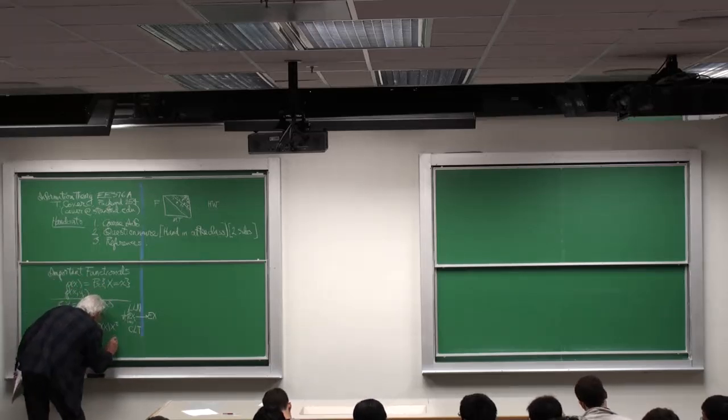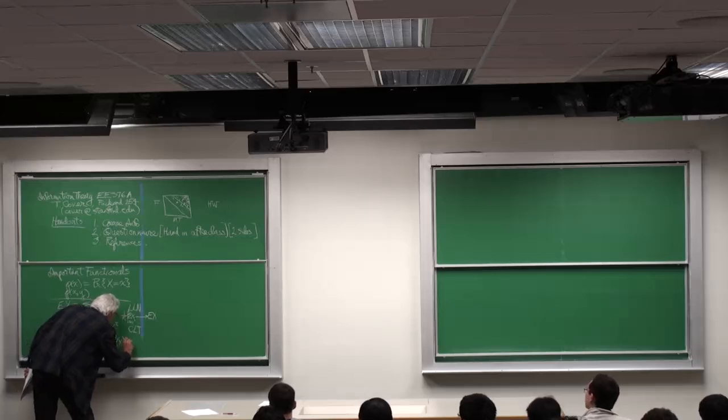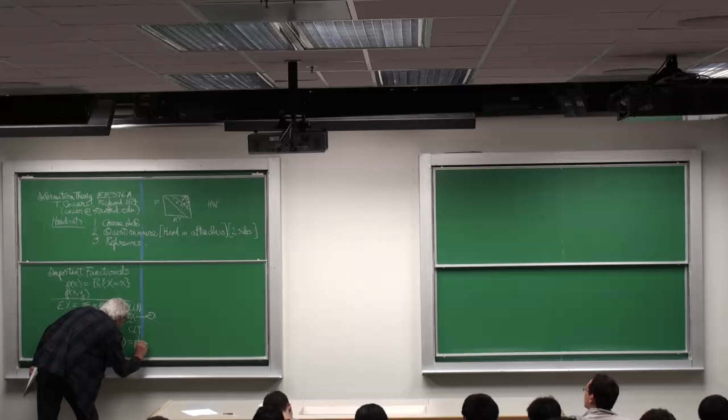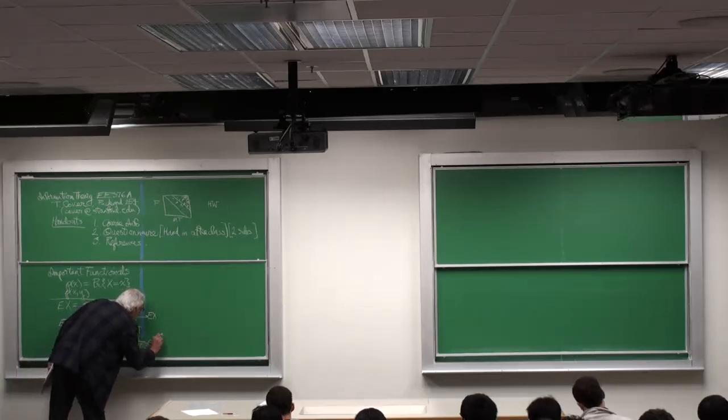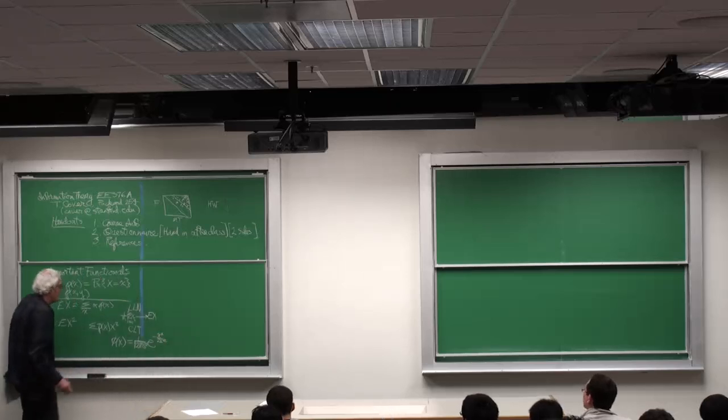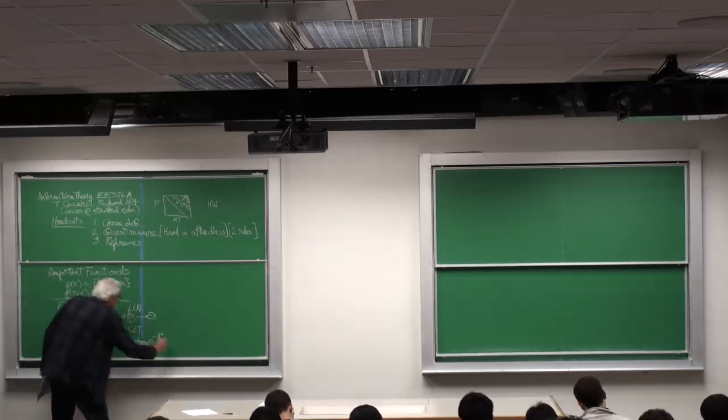you get Phi of X, a limiting density, which is 1 over square root of 2 pi sigma squared, e to the minus X squared over 2 sigma squared. That's this.